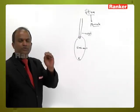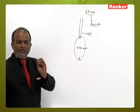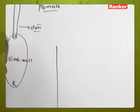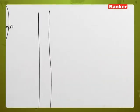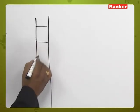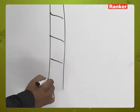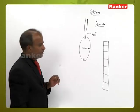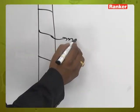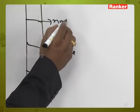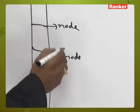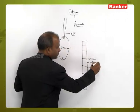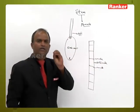The stem is differentiated into nodes and internodes. The lines on the stem indicate the nodes, and the portion present between two nodes is called the internode.